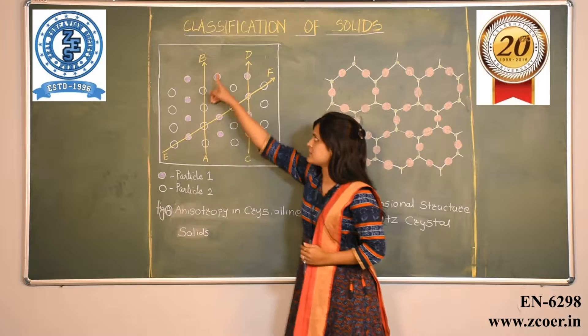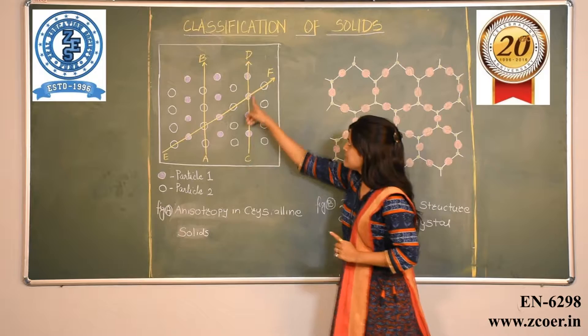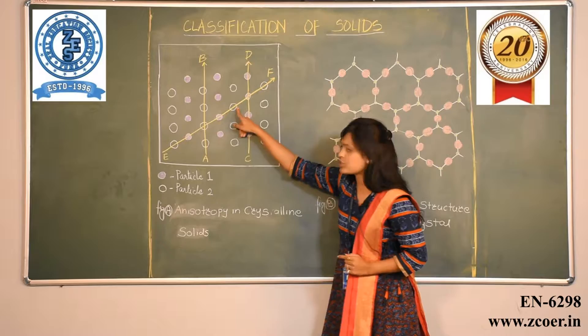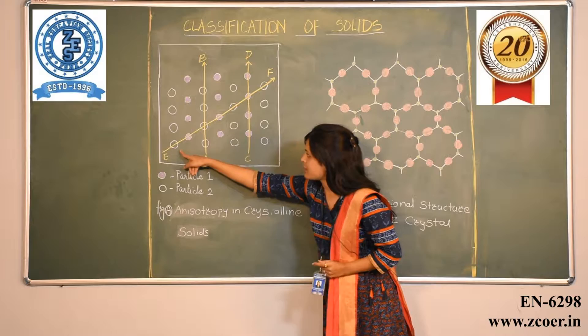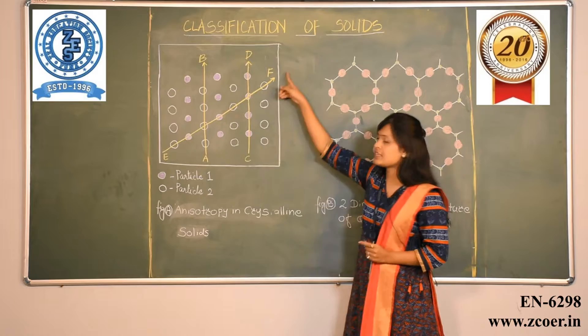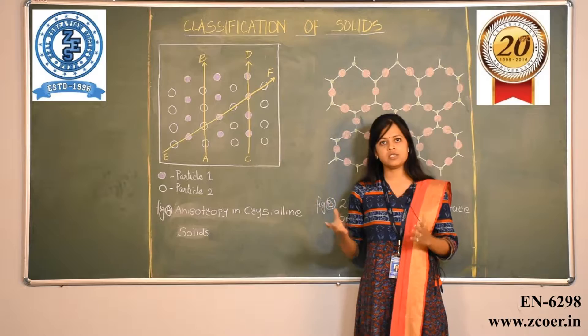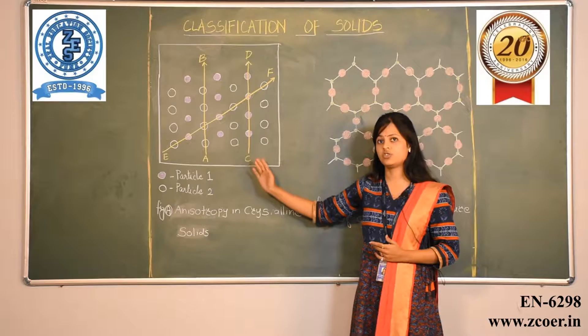When I measure the same refractive index in a different direction, it passes through particle 1. And in yet another direction, it alternates: particle 2, particle 1, particle 2, particle 1. So the refractive index will vary in all three directions. This particular property is called anisotropy. Isotropy means the same in all directions; anisotropy is the opposite — different values of properties in different directions.